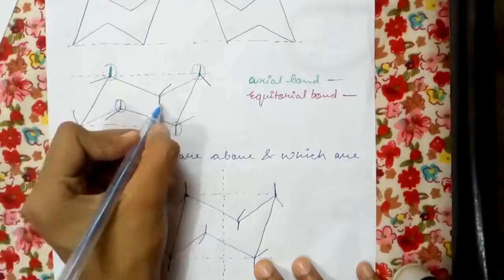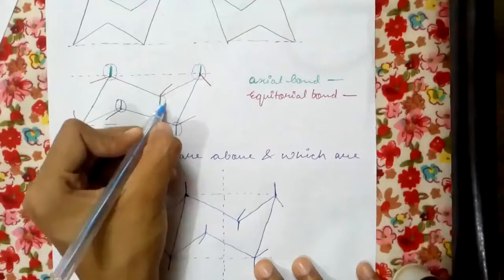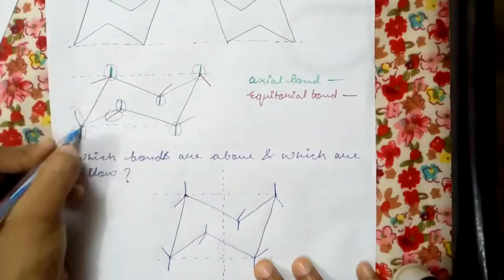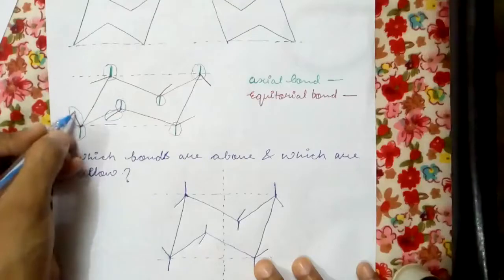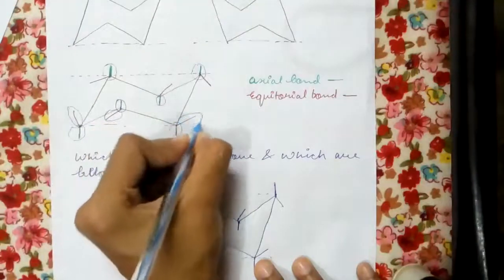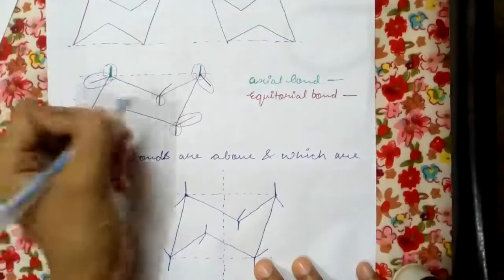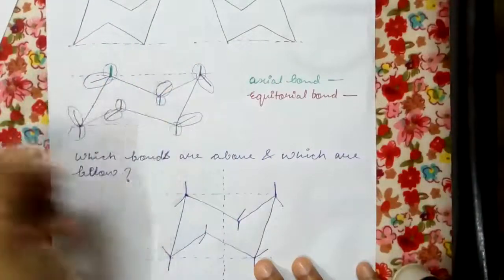See this one, but this is not above, this is below. This is below, this is below, this is above - it is facing upward so it is above. This one is also above, this is below, this is also below, this is above.